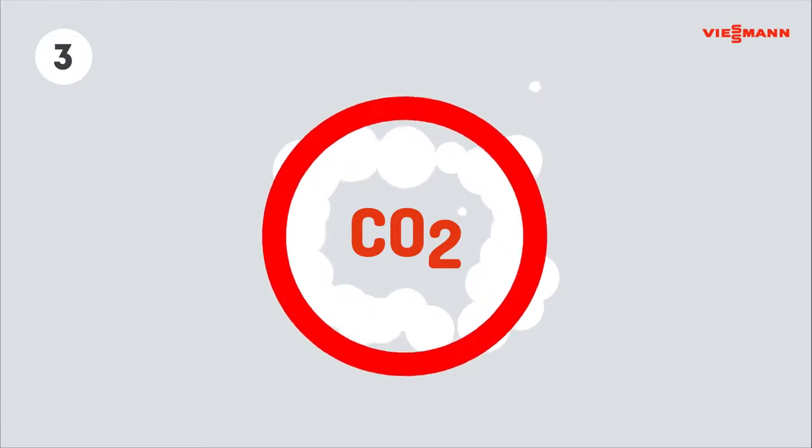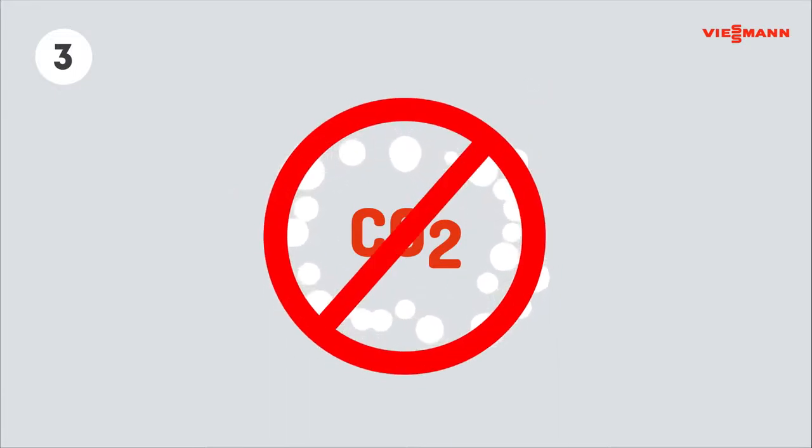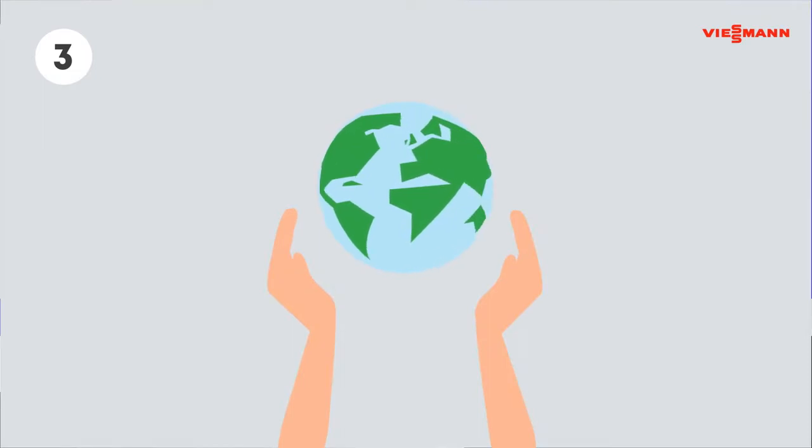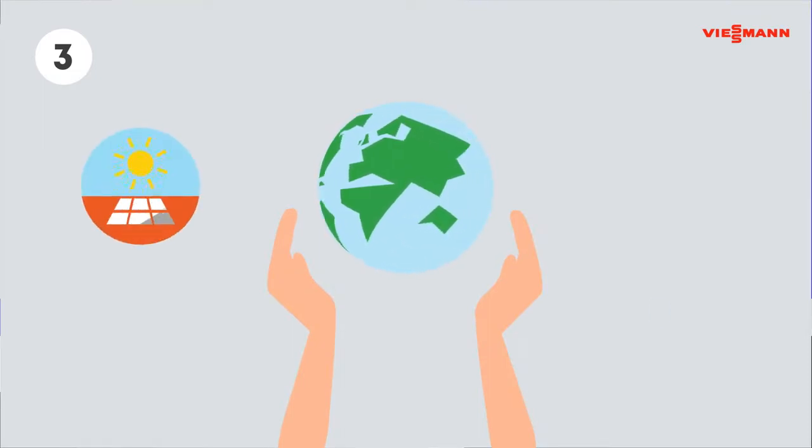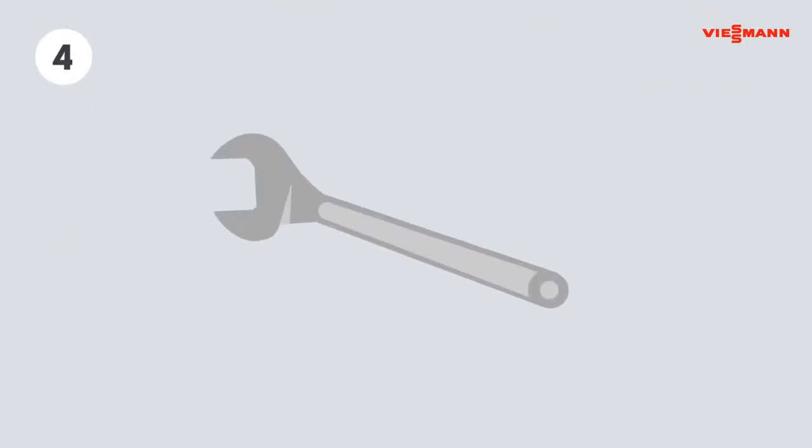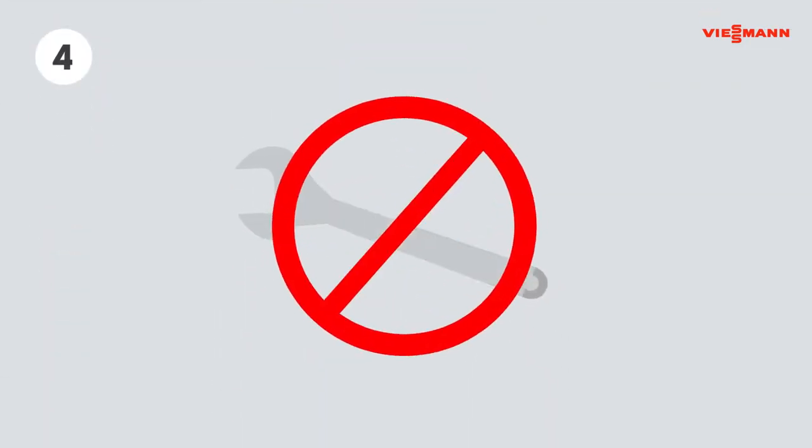The Viessmann Vitocal itself does not produce any CO2. It only requires a little electricity. It is therefore very environmentally friendly. Especially when the electricity also comes from renewable sources. A heat pump requires little maintenance.